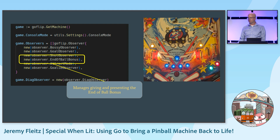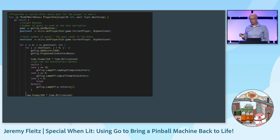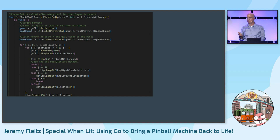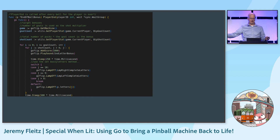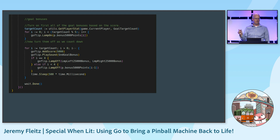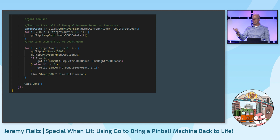End of ball bonus is where we take all the shots hit and Mike Bossy letters and calculate the score for the player. This is where I started using a WaitGroup. The reason is there are other Go routines running — playing sounds, waiting, doing incremental score display — and you don't want that running in a Go routine while simultaneously ejecting the ball and starting the next ball. I use a WaitGroup to signal to GoFlip that this routine is still running, and don't proceed until it's complete. At the very end there's a WaitGroup.Done call. For all other observers, there's no need for this in player end — they just call WaitGroup.Done.